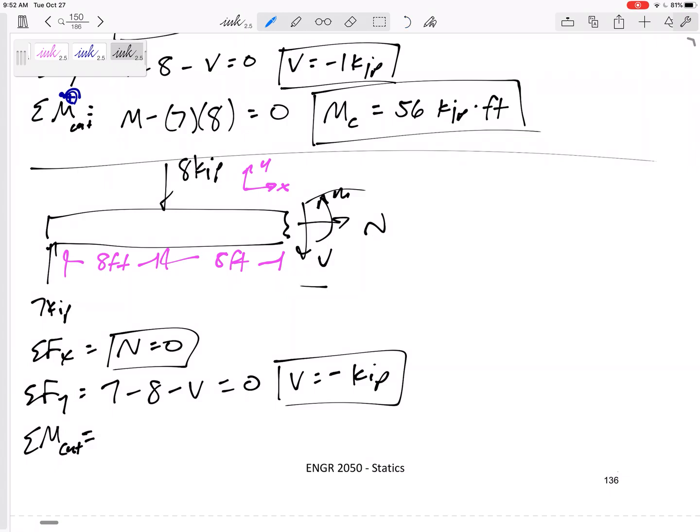All right, now I'm going to sum the moments at the cut. N goes straight through the cut. V goes straight through the cut. I've got that M. You know, I want to choose positive counterclockwise. So that is M right there. And then eight is eight away, creating also a positive moment. But then the seven is 16 feet away, creating a negative moment. So I would get this M is, I think, got positive 48 kip feet. So boxed in, leave it right there. So that's, I'm looking for these three things, boxed in, and the correct sign.